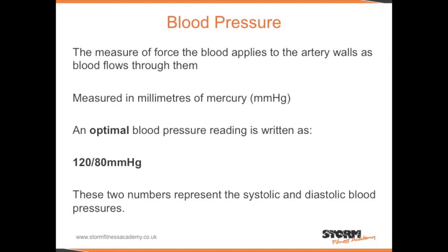We've mentioned blood pressure, but we haven't talked about what blood pressure exactly is. By definition, blood pressure is the measure of force that blood applies to the artery walls as the blood flows through them. We measure it in millimetres of mercury. An optimal blood pressure reading is written as 120 over 80 millimetres of mercury. These two numbers represent the systolic and the diastolic pressures.